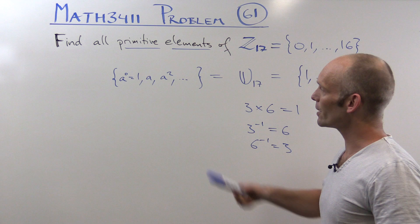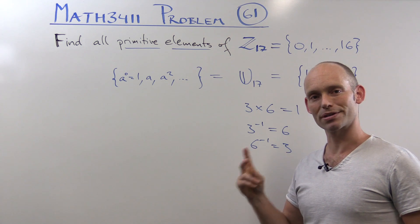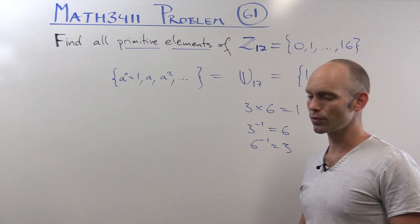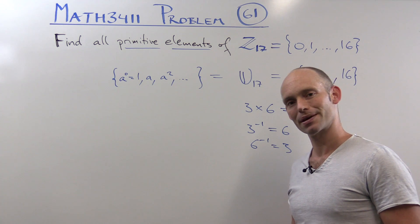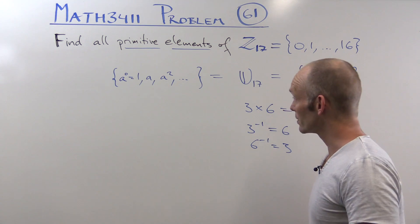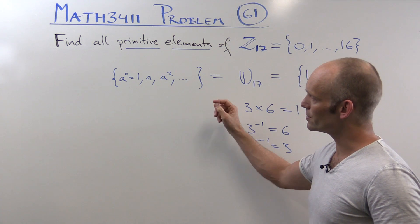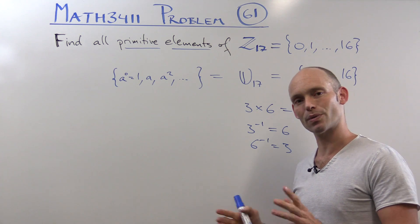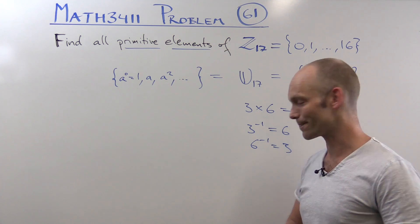How do we find them? We can do this in two steps. The first step is a bit of trial and error and a bit annoying, but the second step is really easy once we've done that. The first step is just to find a single primitive element. Once we've found one, we can find the rest.